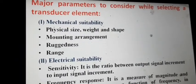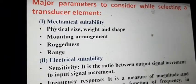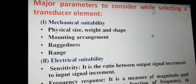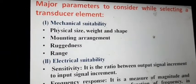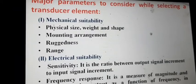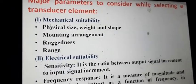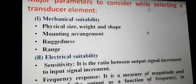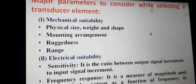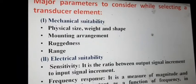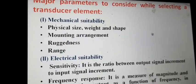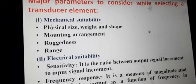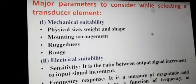Ruggedness means the transducer should be able to protect itself from overload, just like a fuse in your house — when current increases beyond a certain level the fuse burns. Similarly, the transducer should have some arrangement to prevent sudden failure or damage from overload when its measurement value increases beyond a certain range.